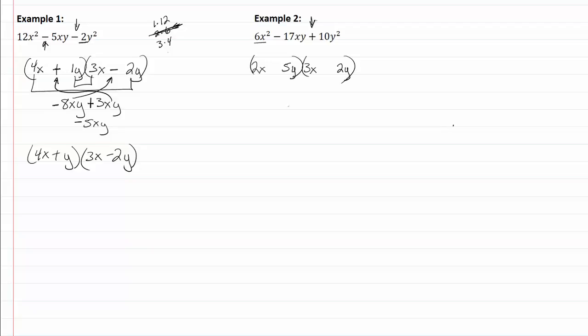My plus in front of my ten says I'm going to add my outside terms and my inside terms, so I have 4xy plus 15xy and four plus fifteen is going to give me 19xy which is not seventeen, so that means I need to do something different.